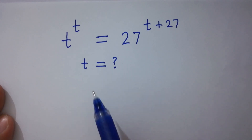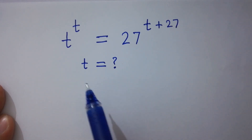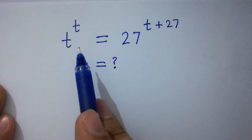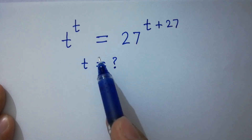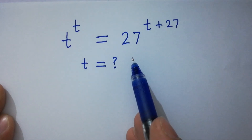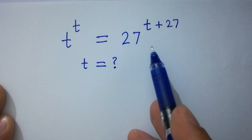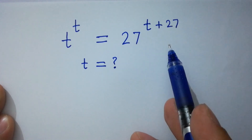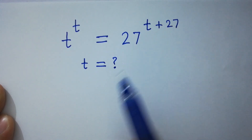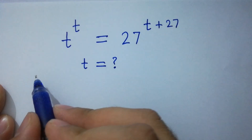Hello friends. Find the value of t if t to the power t equals 27 to the whole power t plus 27. Let's have a solution.